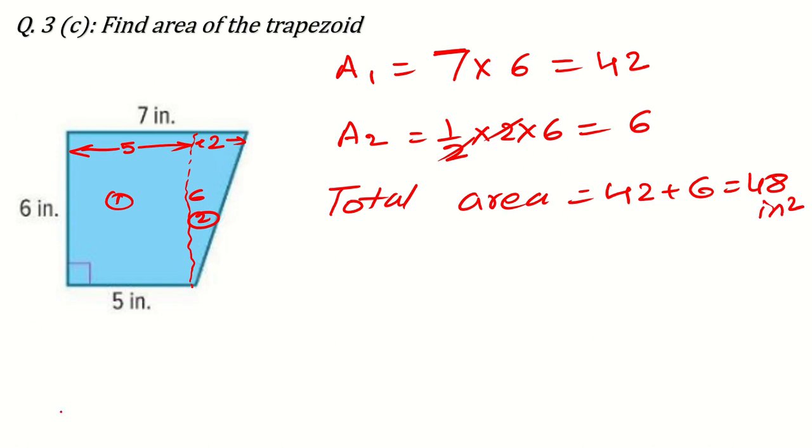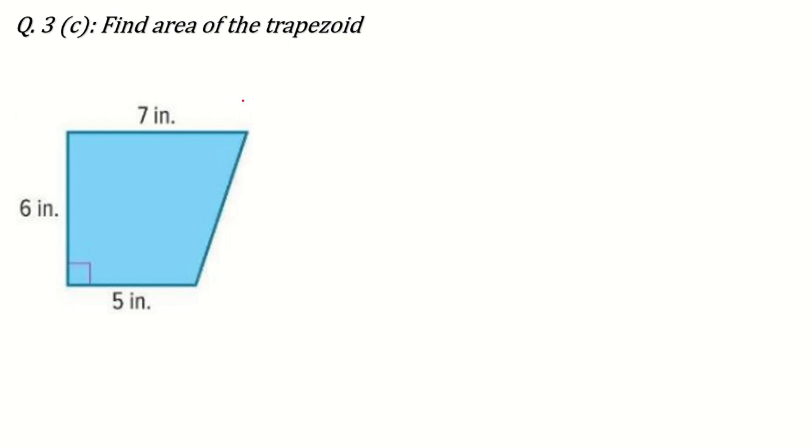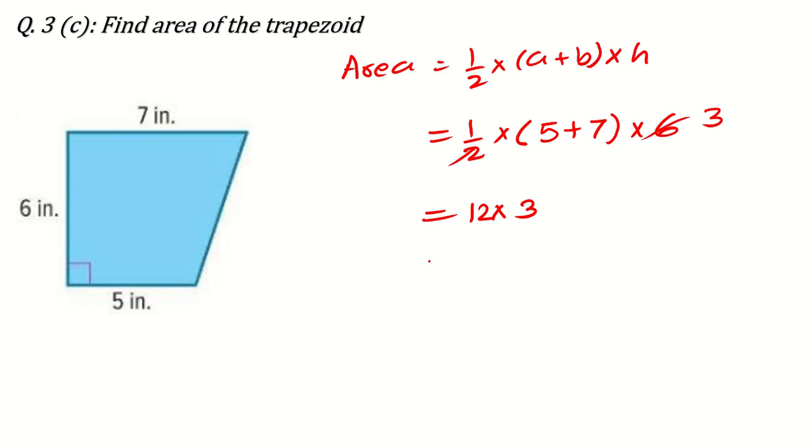This is the one method. And I focus on the second method what I am telling you because it will be very short and it will save your time in exam also. So, area is equal to half of A plus B means sum of the parallel sides multiply by height. So, this is half of parallel sides are 5 and 7 times height is 6. Now, 6 divided by 2 is 3. 7 plus 5, 12 times 3 and 12 times 3 is 36 inch square. I am sure you understood this thing.